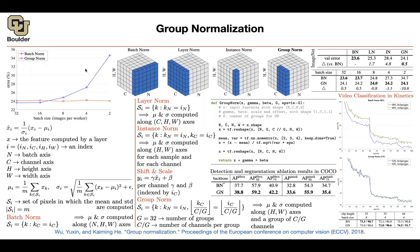Next session we are going to do 3D data — point cloud data. Point clouds don't have any structure. So far our data has had a batch dimension, channel dimension, height and width dimension, and we can put that on a grid. Point clouds are not going to have any grid — it's just a set of points in space. I'll be around if you have questions.